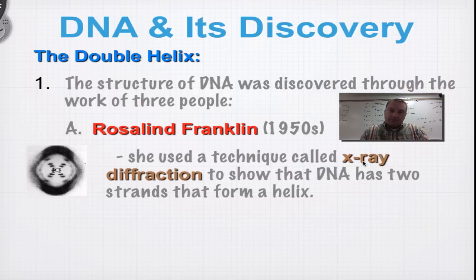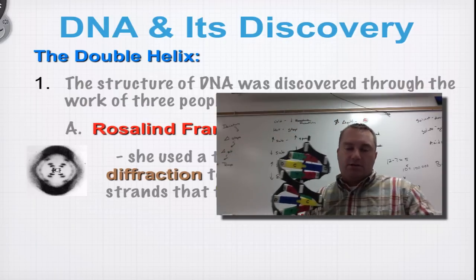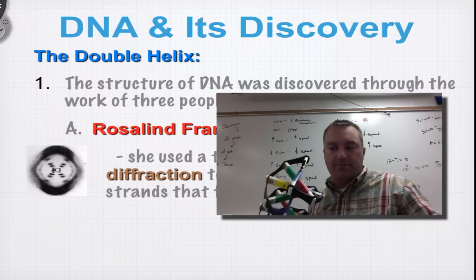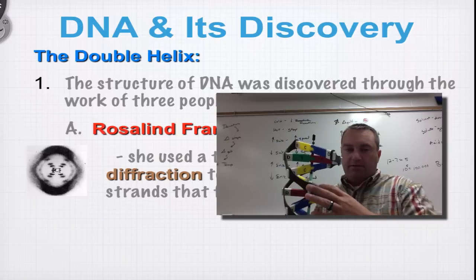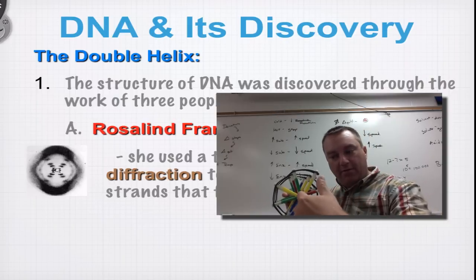What Rosalind would do is she would take x-rays and shoot them into, say, a beaker full of some certain kind of biomolecule. And when she was working with DNA, I've got a prop here to show you. She basically got lucky on one or two of her shoots. And if you see here in this model of DNA, the x-ray went straight down through it.